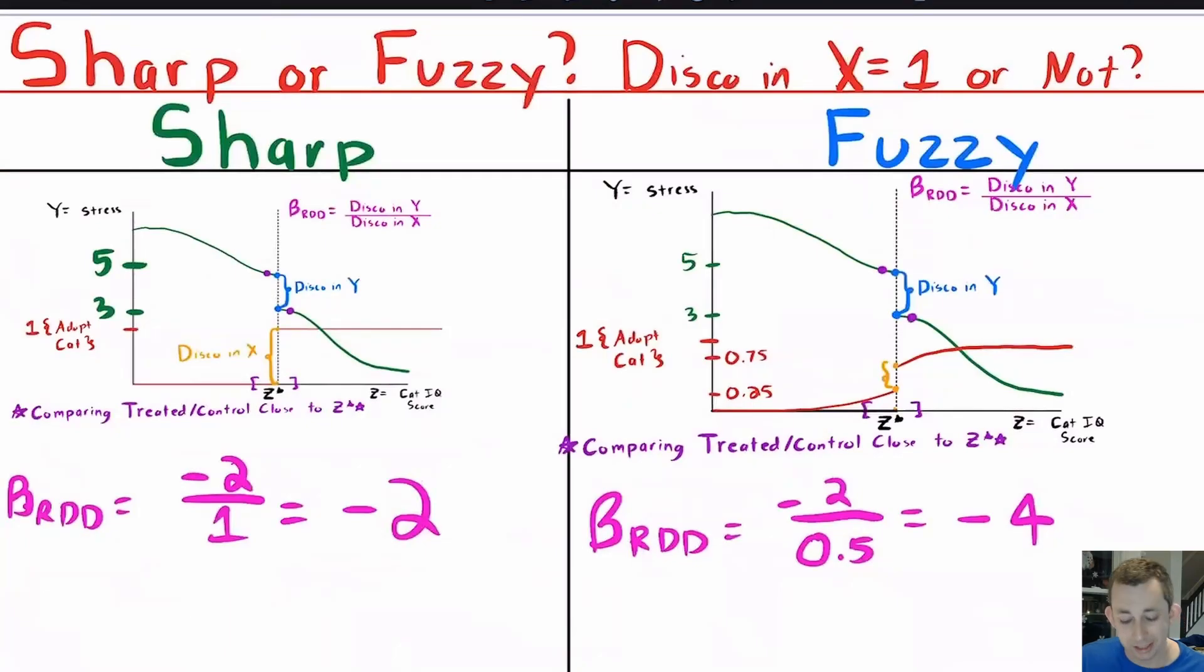To tell whether or not an RD is sharp or fuzzy, it's going to be really simple. All you're going to ask yourself is how does my treatment change right at the threshold? If it changes by one, if no one adopts a cat who just barely fails this IQ test, and everyone who just barely passes the IQ test does indeed adopt a cat, then your treatment status is going from zero to one absolutely right at that threshold. And that is what we call a sharp RD.